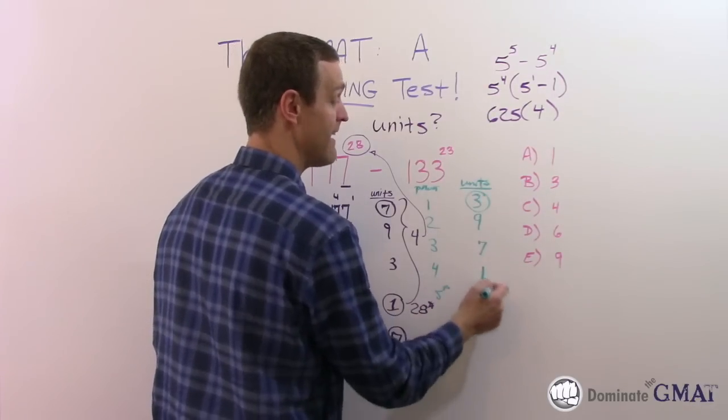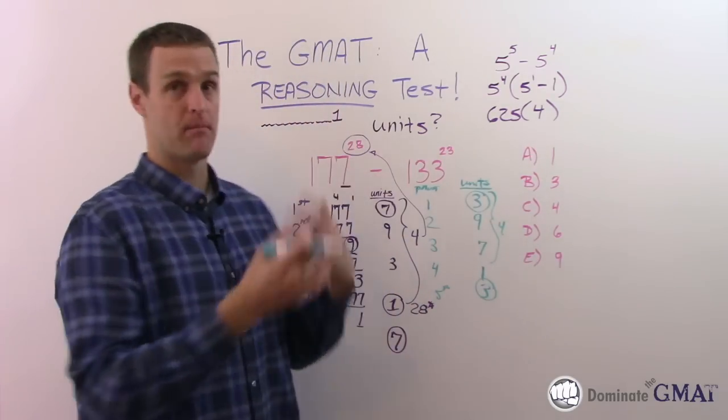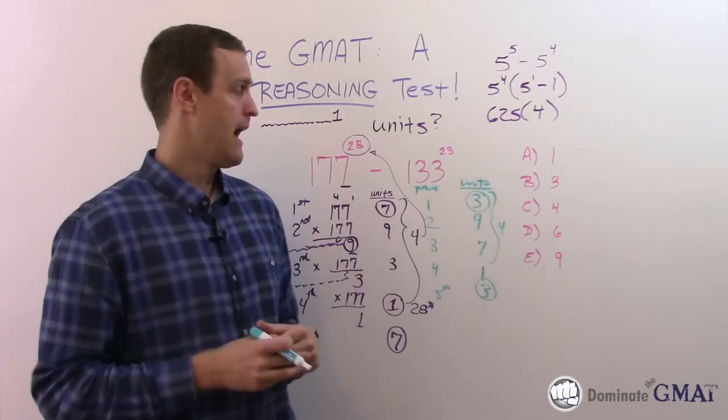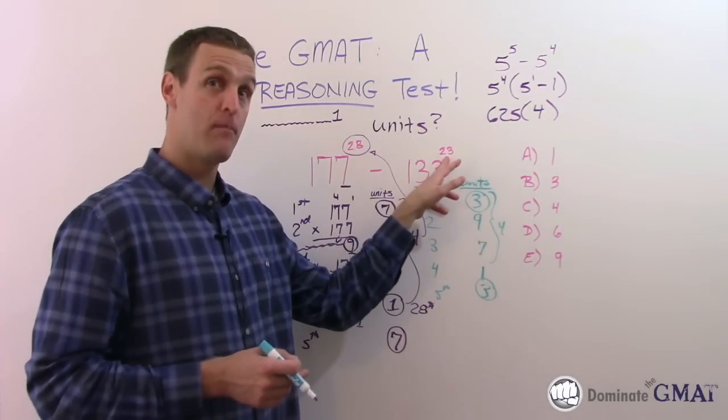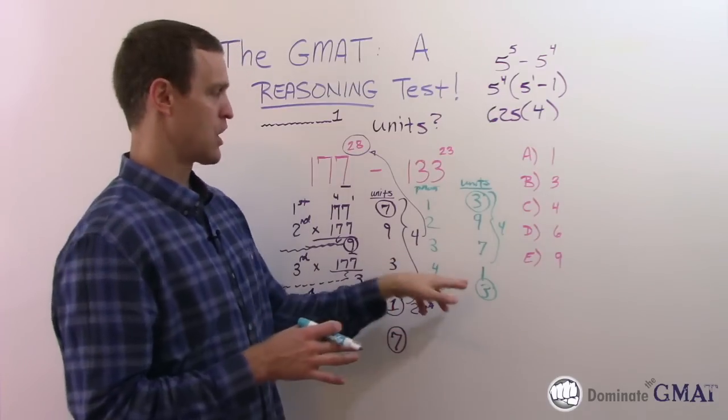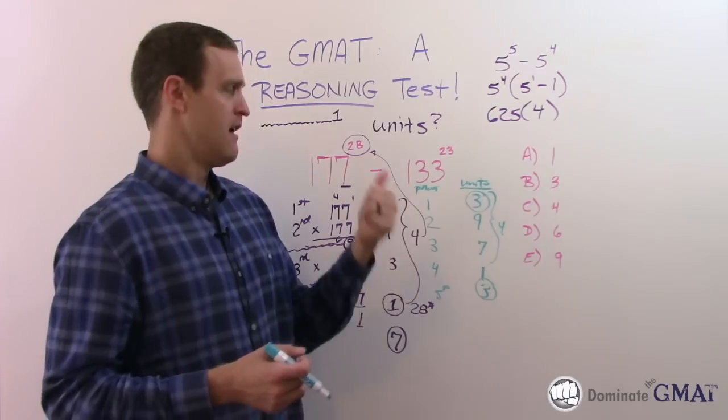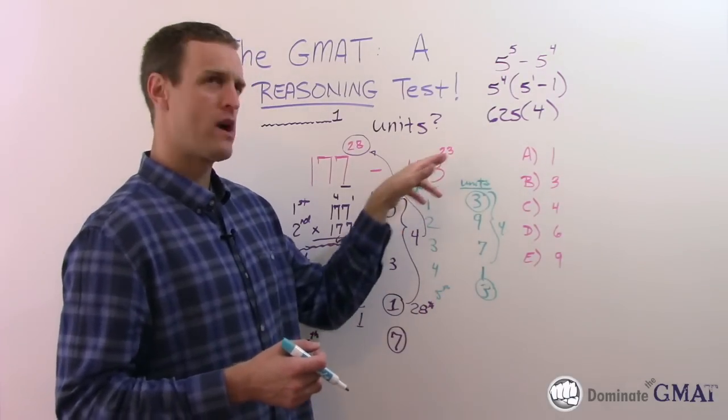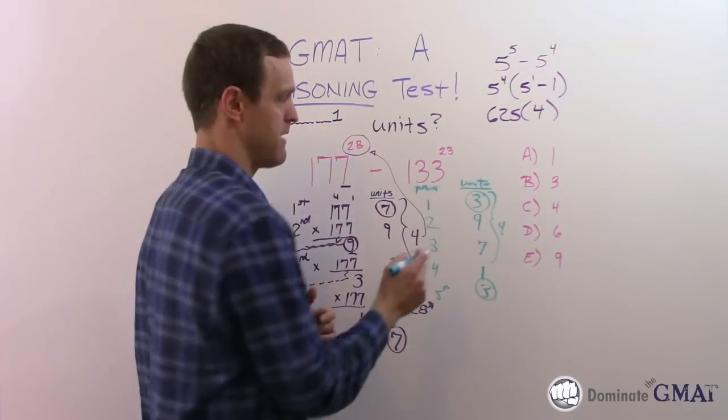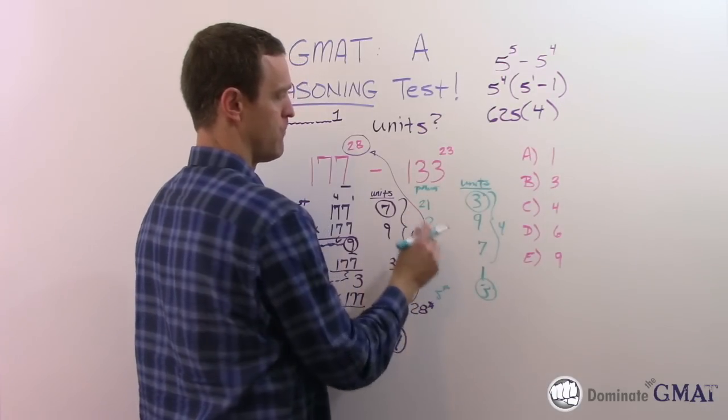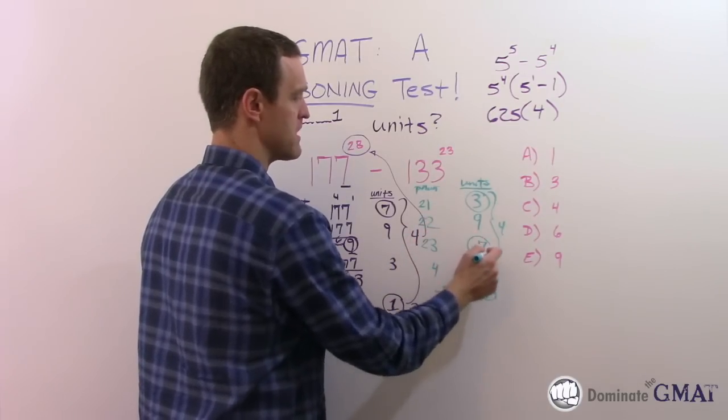It's not always the case that it will repeat every four, but these both happen to. What's the unit's digit at the 23rd power? This is a little different - it doesn't go in evenly. Four will go into 20 evenly 5 times. So at 20, it will reset. The 21st one will be 3, the 22nd will be 9, the 23rd therefore will be 7.